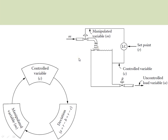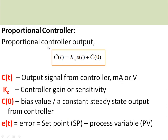The variables encountered in a process control system can be understood by looking at this level control system example, where the tank level needs to be maintained at a constant value. The level is measured by a process sensor and fed back to the level controller. The level is the controlled variable. Depending on the difference between the set point and feedback, the controller commands the final control element — a control valve — which controls the incoming feed rate. Here, the manipulated variable is the incoming feed rate.